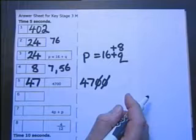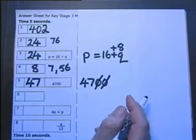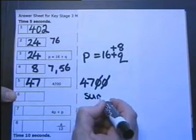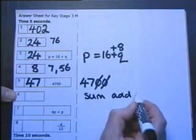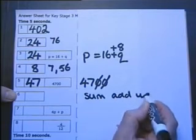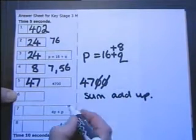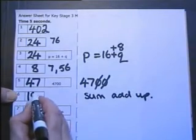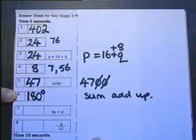Number 6: What is the sum of the angles of a triangle? You need to know that the word 'sum' means add up. So in other words it's saying what do the angles of a triangle always add up to — and you either know or you don't: it's 180 degrees.